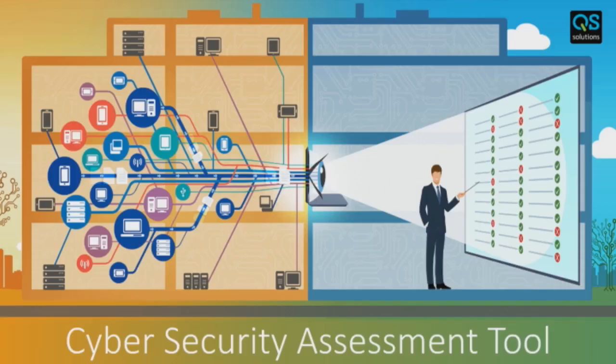We believe that every organisation wants to optimise their IT security, but many organisations struggle with limited security budgets and alignment between IT security and business management is difficult, because many security issues which are already present only become visible when there's a calamity. Our mission with the Cybersecurity Assessment Tool, the CSAT, is to help organisations create an action plan to improve their security by providing fact-based information about the IT security position before problems become a calamity.